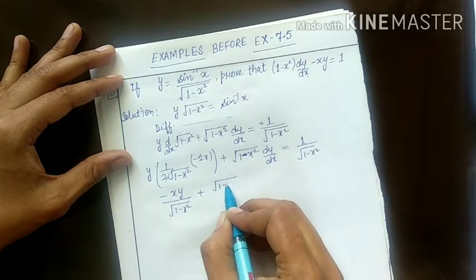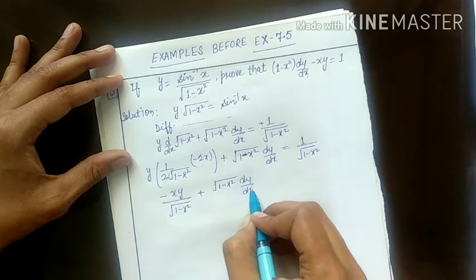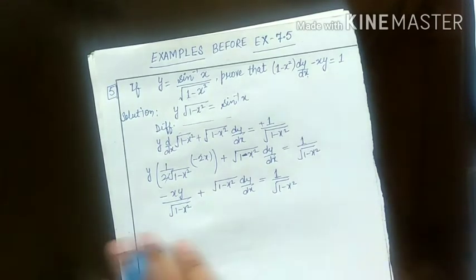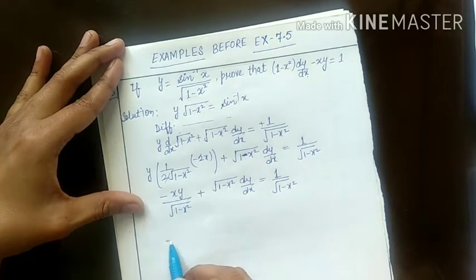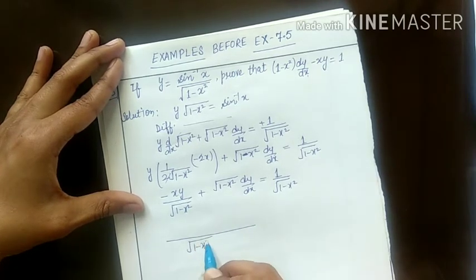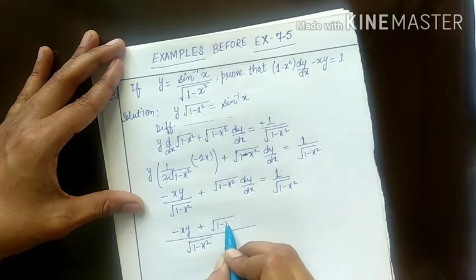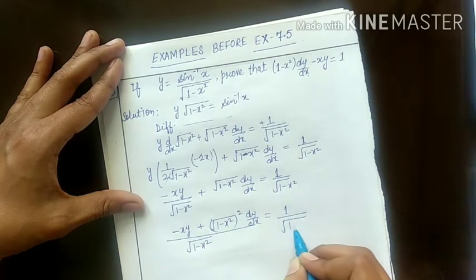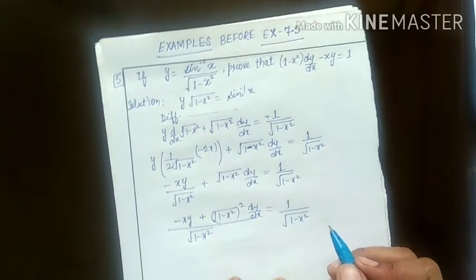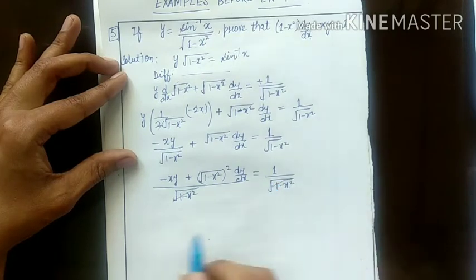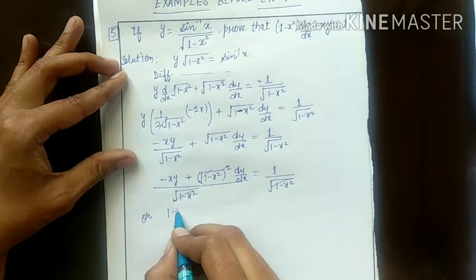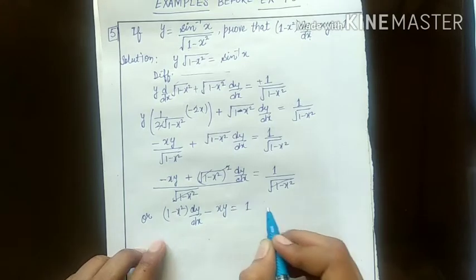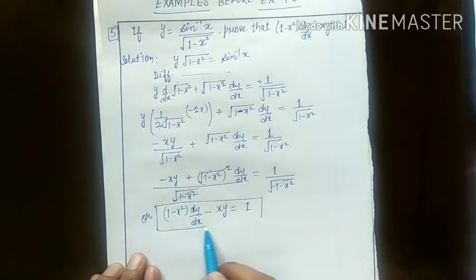And write this 1 upon under root 1 minus x square, plus under root 1 minus x square into dy by dx is equals to 1 upon under root 1 minus x square. So it will be 1 minus x square minus xy plus under root of 1 minus x square squared. Finally, minus xy is equal to x square, which is what you had to prove.